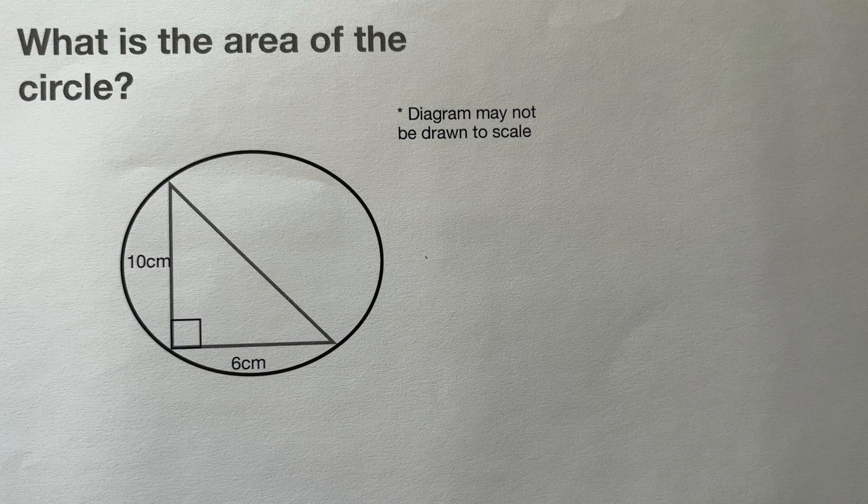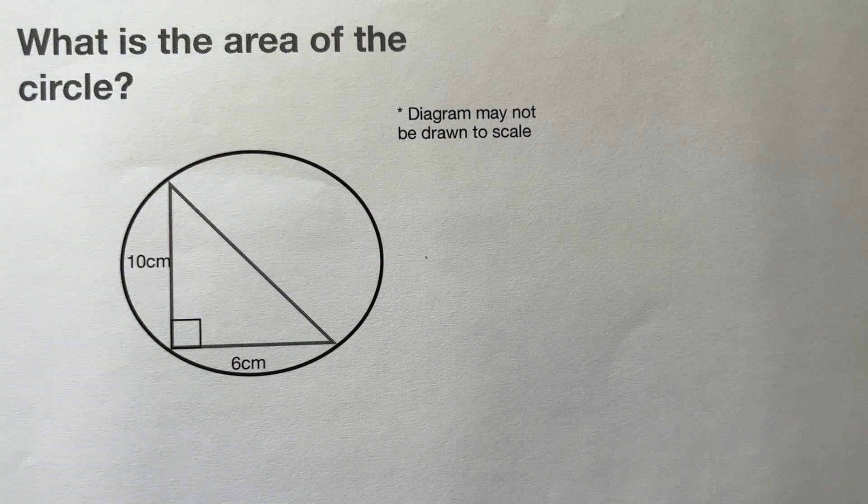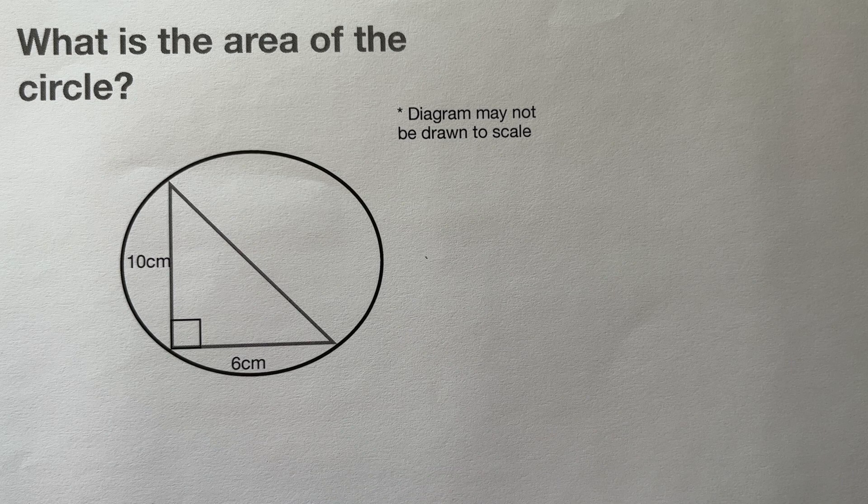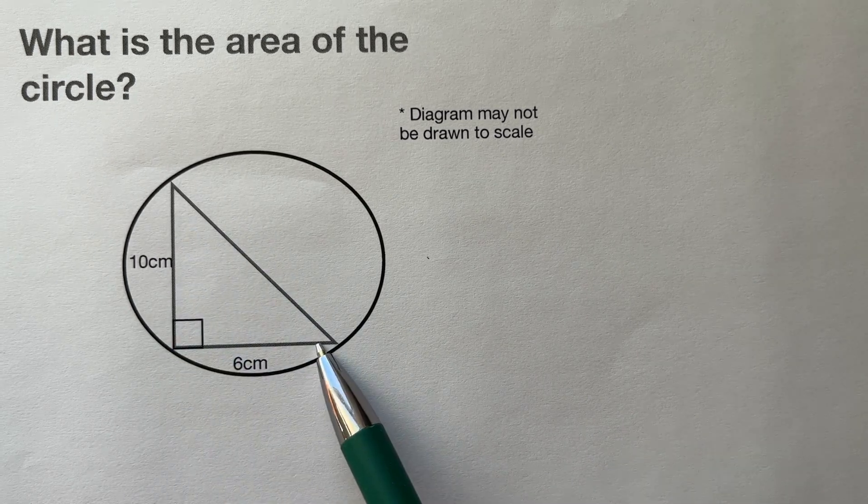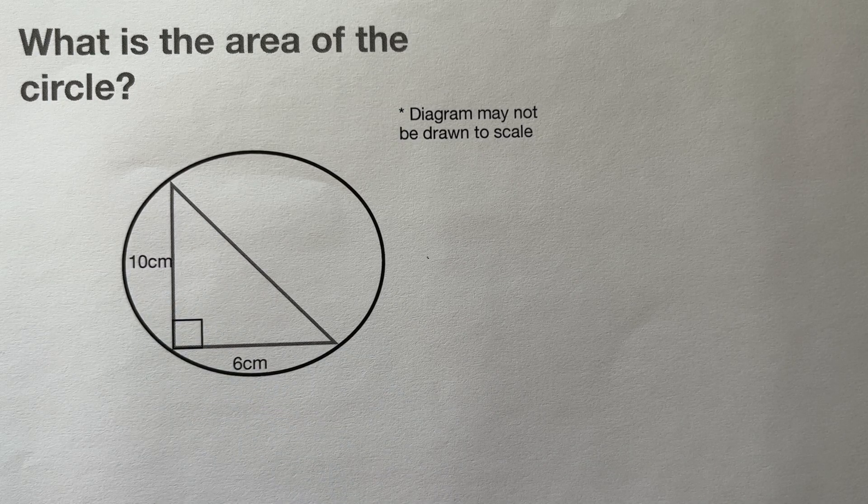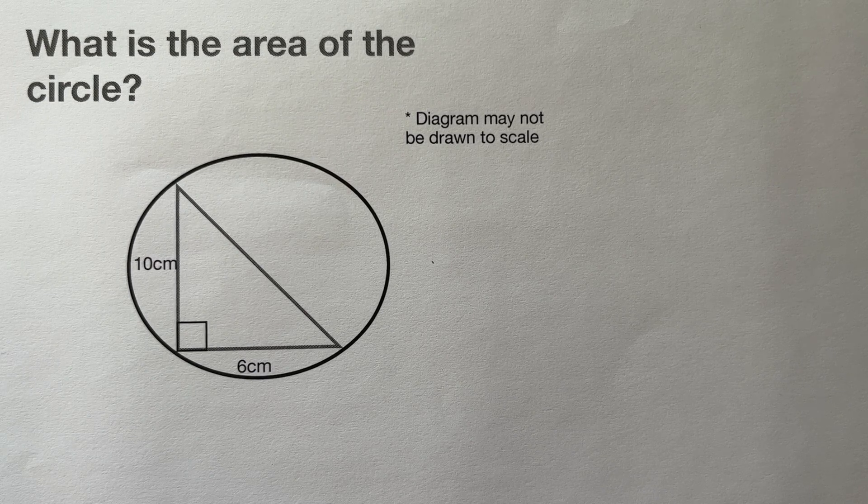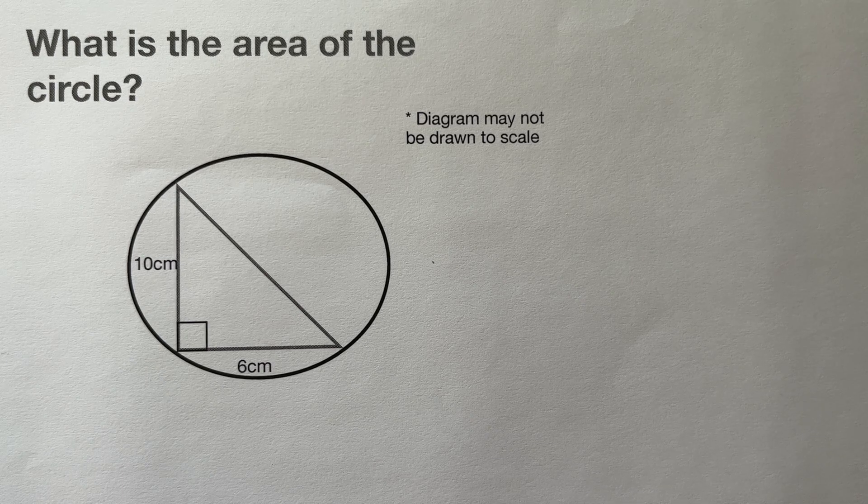Hello, welcome to Math Vibe. Happy New Year! Let's solve this problem: What is the area of the circle? There is a right triangle circumscribed by the circle with two sides measuring 6 centimeters and 10 centimeters. How do we find the area of the circle? To do this, we need to recall that